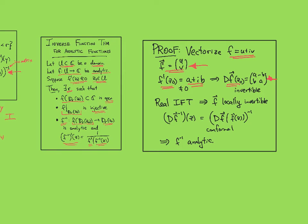And we're assuming that this derivative is nonzero, which means this derivative matrix is invertible. So we apply the real inverse function theorem to see that the vector f is locally invertible as a function, and its inverse function is C1.